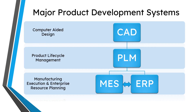In product development there are a number of different systems that you use in order to create, manufacture, and deliver your products. Four of the main ones from the product development side are your CAD tools such as Creo Parametric. You manage that data in a PLM or product lifecycle management system — that's what Windchill is — and a couple of other systems that connect include your manufacturing execution system and your enterprise resource planning software.